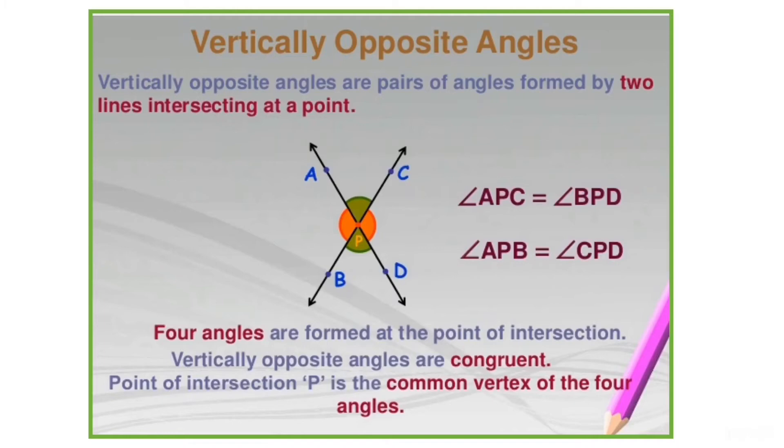Vertically opposite angles. These angles are formed when two lines intersect at a point. When two lines intersect at a point, four angles are formed. The point where they intersect is known as the point of intersection, and four angles are formed at the point of intersection.